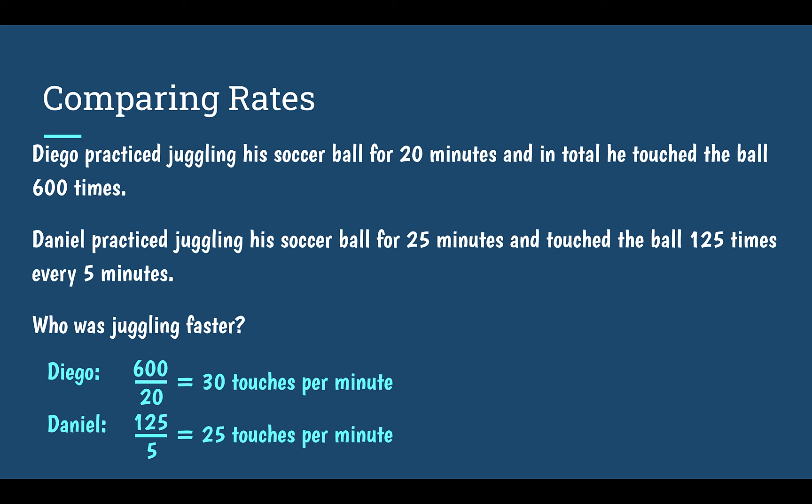If we wanted to write equations for these two, Diego's touches would equal 30 times the number of minutes, and Daniel's touches would equal 25 times the number of minutes he juggles for.